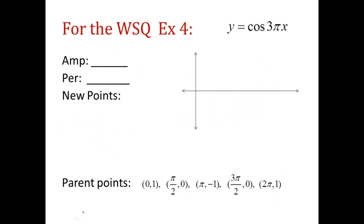For the worksheet exercise 4, I want you to try this one. Only one change going on. It's just a period change. B is 3 pi. So make sure you apply that correctly to your amplitude, period, graph, points, the whole shebang. Good luck. And we'll see you in class.